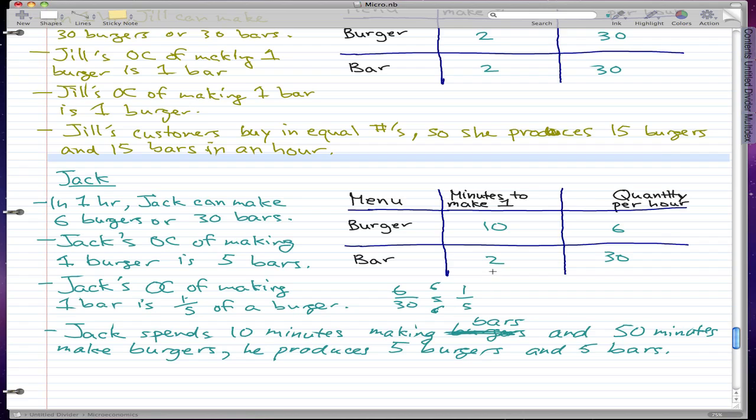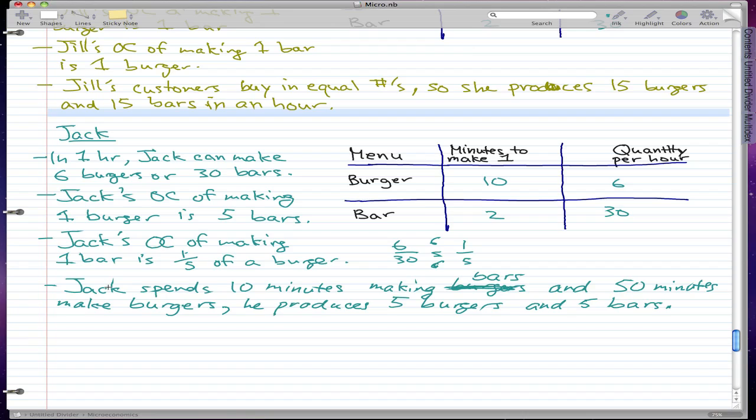Now let's see if I did the math right. To make one bar it takes him 2 minutes, so in 10 minutes he'll make 5 bars. And to make one burger it takes 10 minutes, so 50 minutes would make 5 burgers. Okay, I got the math right. Let's end it here for today, and the next video we'll talk more about this example. Please rate, comment, and subscribe if you haven't already, and I'll see you guys next time.